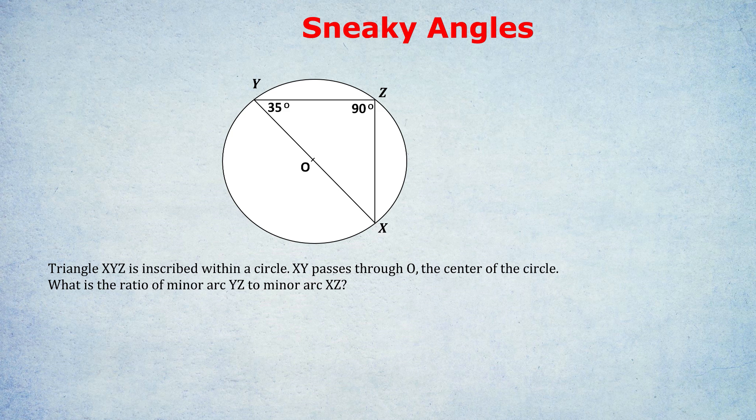Furthermore, we have two angles in the triangle now, so we can quickly deduce that the final angle must be 55 degrees. Now I know what some of you are thinking. Okay, we know which arc is bigger. For example, YZ, opposite to the 55 degree angle, must be bigger than XZ, which is opposite to the 35 degree angle. But that doesn't tell us a ratio, it just tells us that one is bigger than the other.